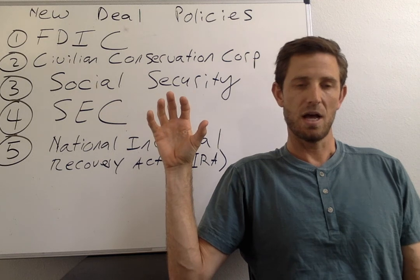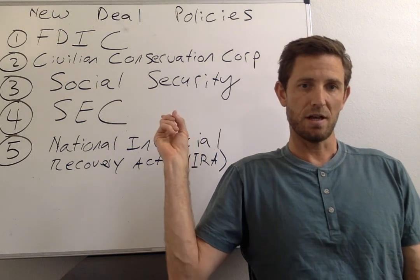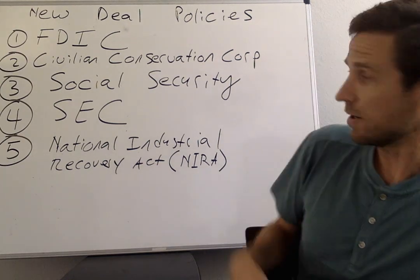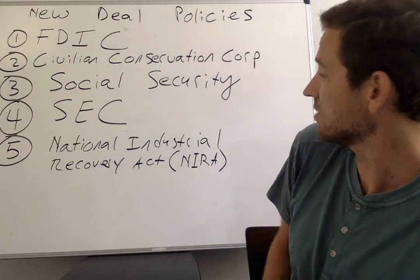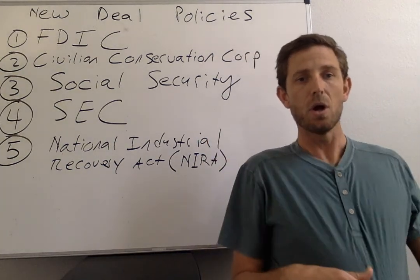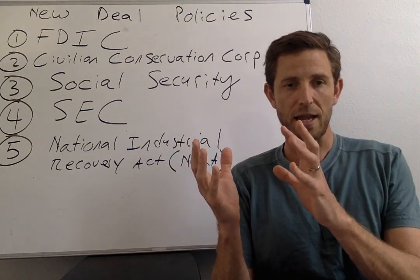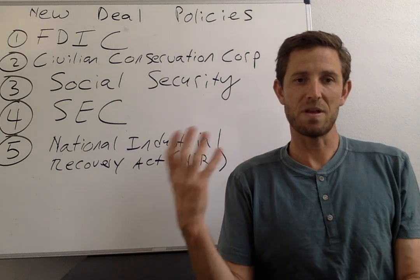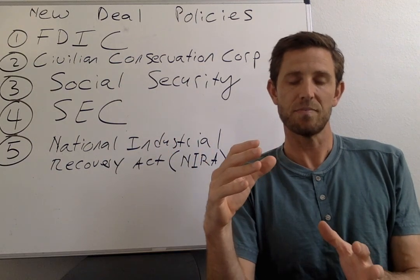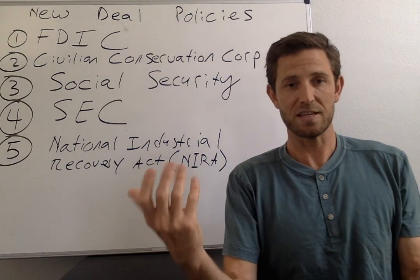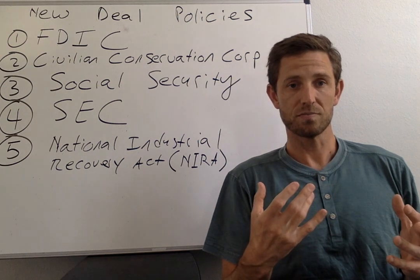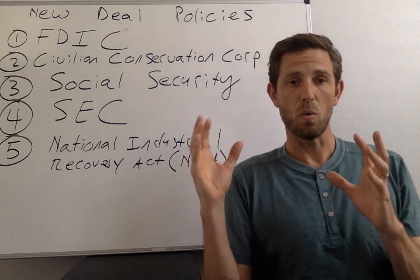The punchline with the SEC: think more structure and regulation of financial companies. The fifth and final reform is NIRA — the National Industrial Recovery Act. The objective was to change the rules and institutions for businesses, creating a framework that encouraged good behavior. Some of what you saw under NIRA was price controls: the government would dictate to firms what prices they could charge.